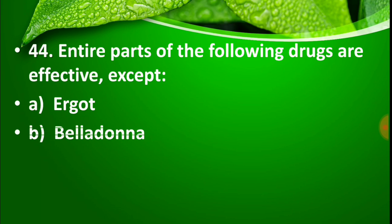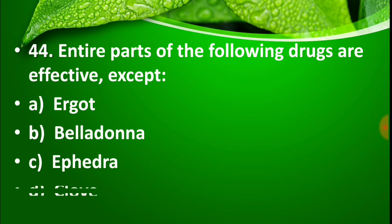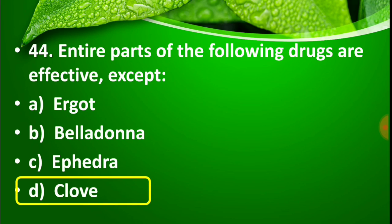Question number 44: Entire parts of the following drugs are effective — except? Option A: Ergot, Option B: Belladonna, Option C: Ephedra, Option D: Clove. The right answer is Option D, Clove. Only the fruit and flower buds of the clove plant are used, while Ergot, Belladonna, and Ephedra — the entire plant is used for treatment.